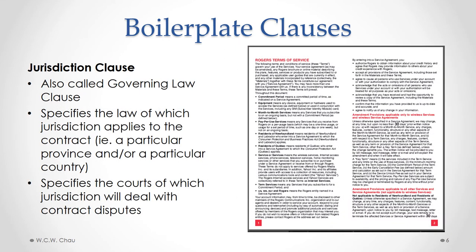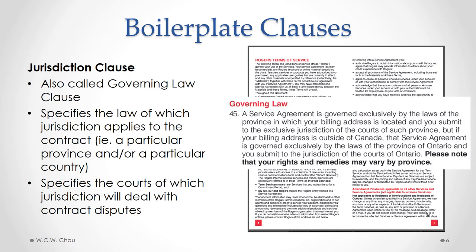A jurisdiction clause, or governing law clause, specifies the law of which jurisdiction applies to the contract — specifically the laws of which province or which country. This clause also specifies the courts of which jurisdiction will deal with contract disputes. The governing law clause in the Rogers contract is in section 45, and it essentially says that the governing law and the relevant courts are those of the province in which your billing address is located.